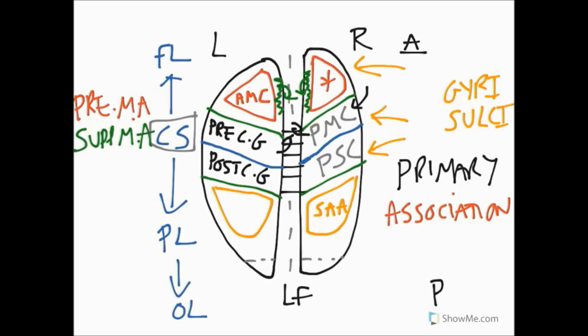If we come back to the sensory association area, if we have a problem or lesion there then often patients will suffer with something that's known as agnosia, which means 'not to know.'